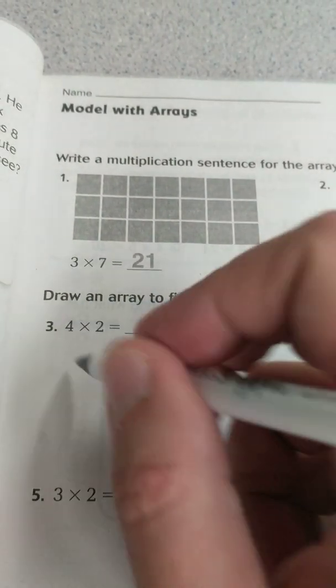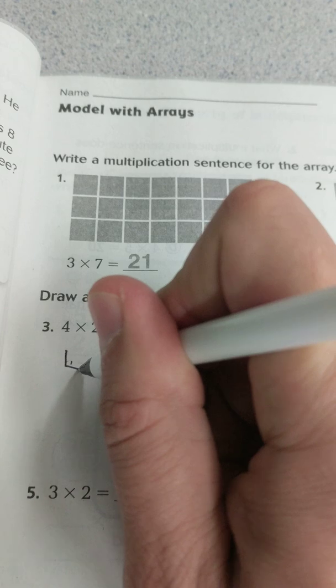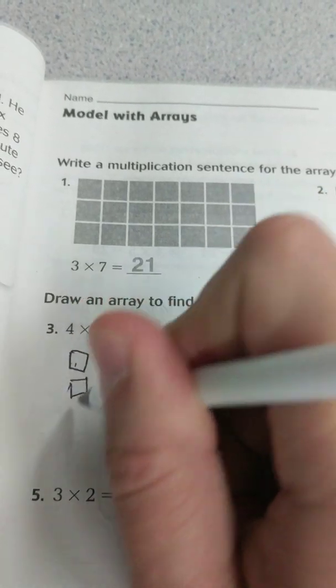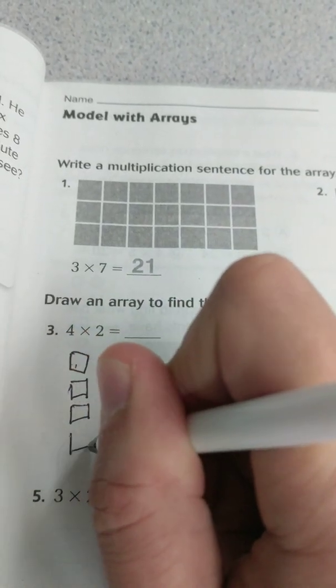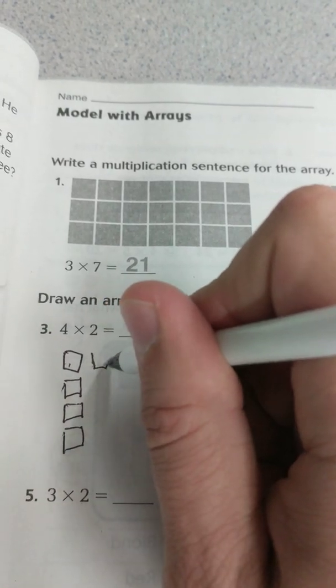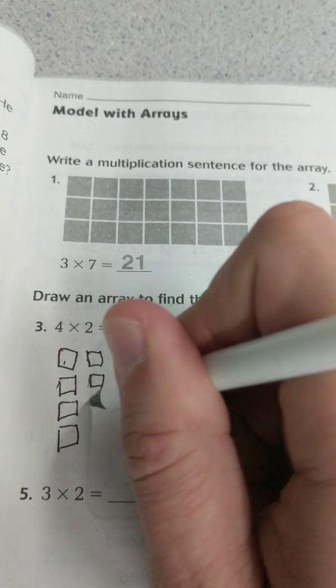So it says 4 times 2. So I'll make a second column.